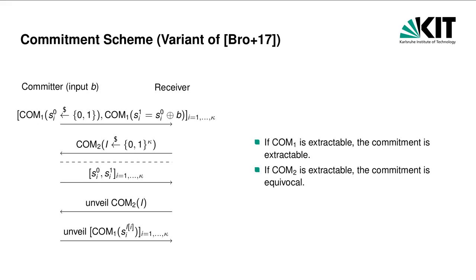In the first round, the committer, with input B, creates kappa pairs of secret shares of its input and commits to these shares, where kappa is the security parameter. In the second round, the receiver samples a uniformly random index vector i of length kappa and commits to i. In the unveil phase, the committer first sends all of its shares but does not unveil the commitments yet — which is crucial. In the next step, the receiver unveils its commitment to the index vector i. Only then does the committer open commitments, but only those indicated by i. So if the first bit of i is 0, it opens the commitment to the first share of the first share pair; if the second bit of i is 1, it opens the commitment to the second share of the second share pair, and so on. The receiver accepts if the unveiled values are consistent with the shares sent in the first round.